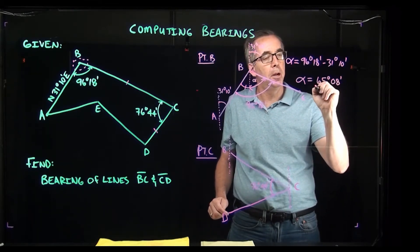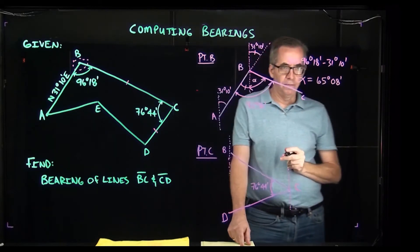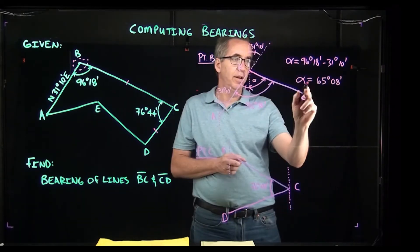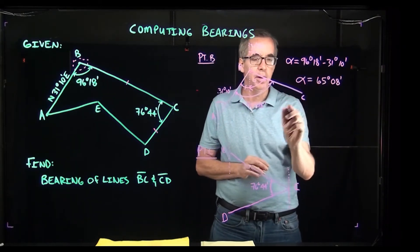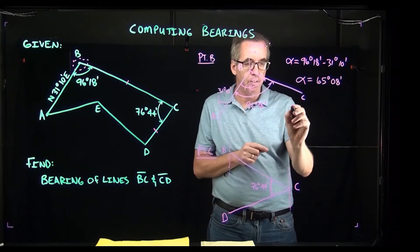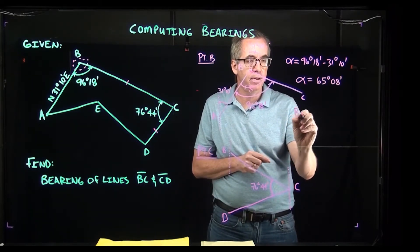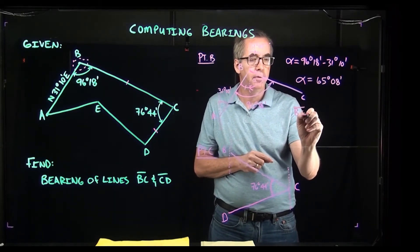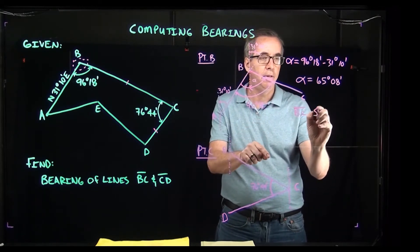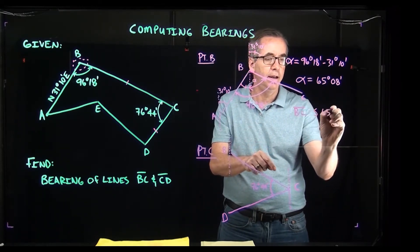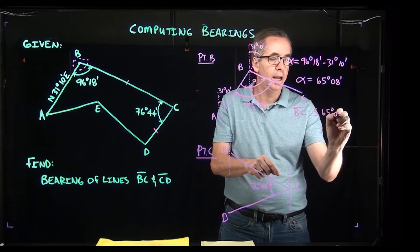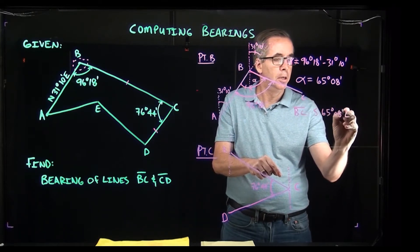If I have 65 degrees 18 minutes, I would say 65 degrees 08 minutes for this angle. My bearing for BC, I'll write that here as the answer, is going to be south 65 degrees 08 minutes east.